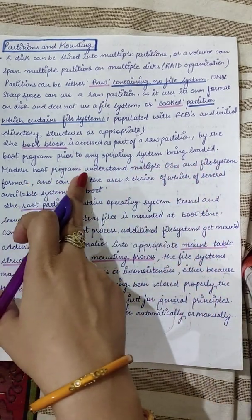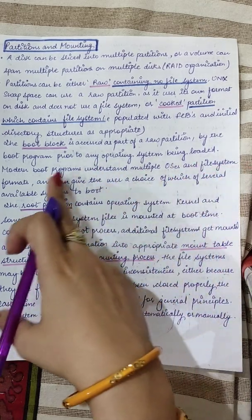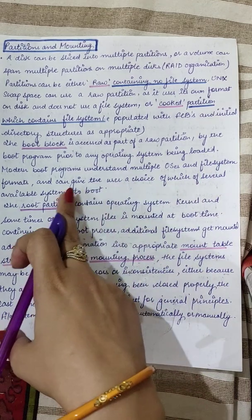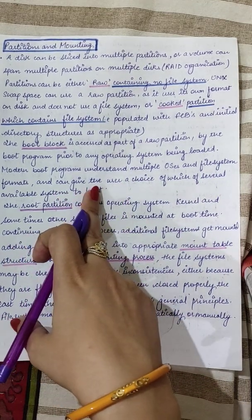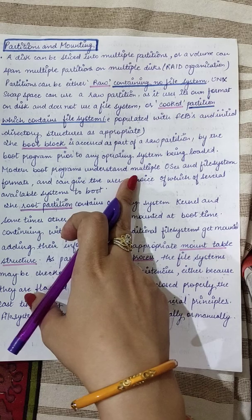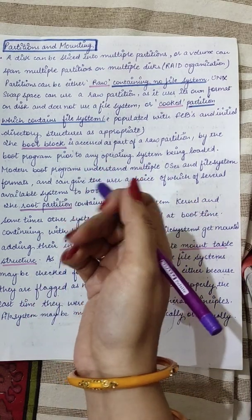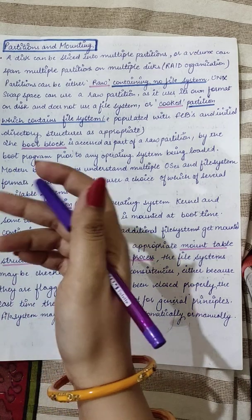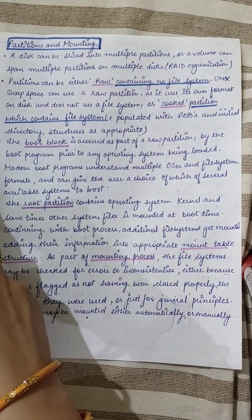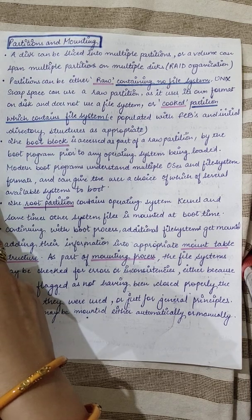Modern boot programs understand multiple OS and file system formats and can give the user a choice of which of several available systems to boot. This refers to multiple operating systems being present on the same machine — like dual booting, where you can have Linux and Windows installed on the same machine. The boot block program should be able to understand which operating system has to be loaded.